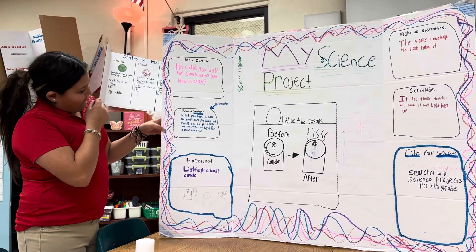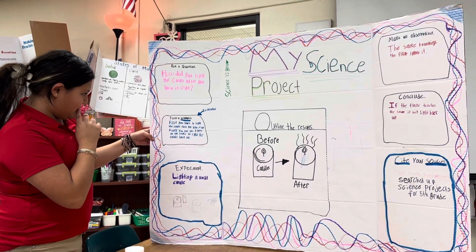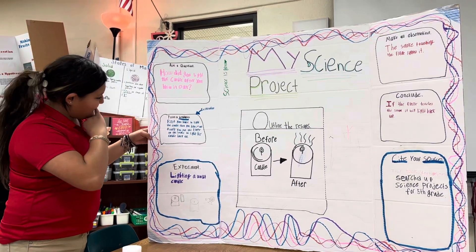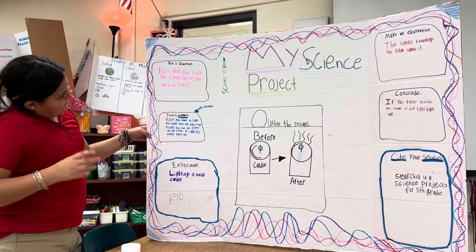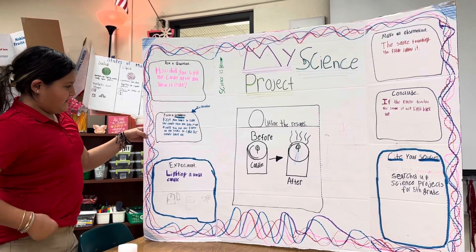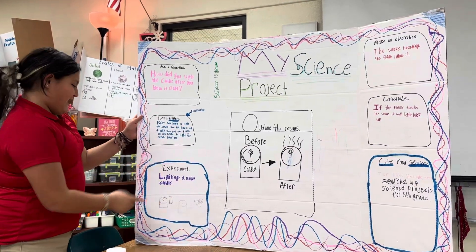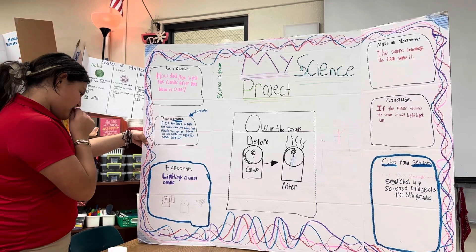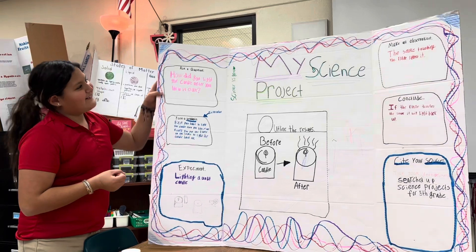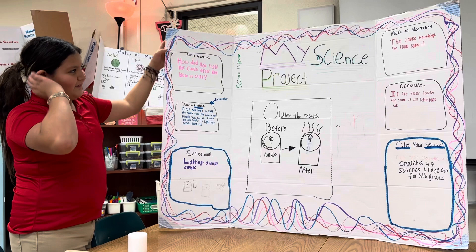I've done that before. Form a hypothesis. I don't really know much about the hypothesis, but basically when the fire touches the smoke, it's going to light. So that's the hypothesis. The experiment is lighting the blown-out candle. The observation is the smoke touching the flame lighted it.